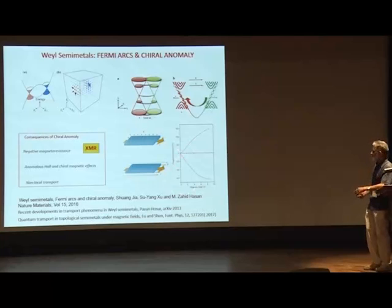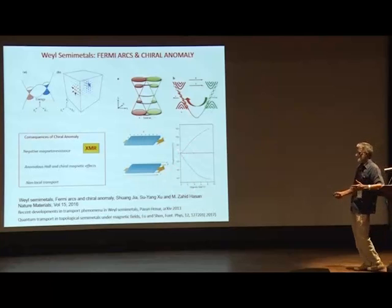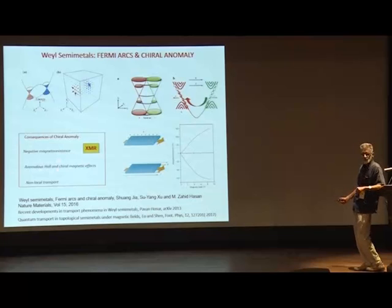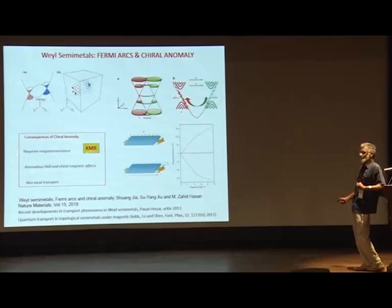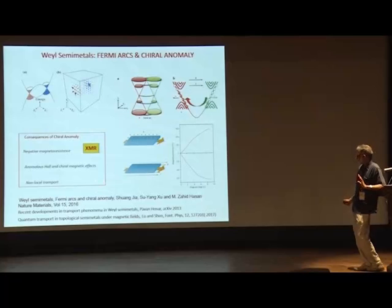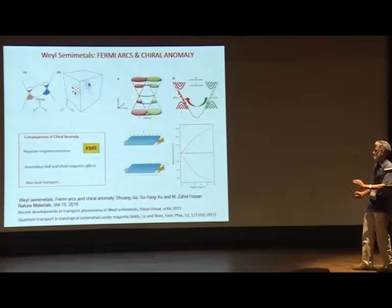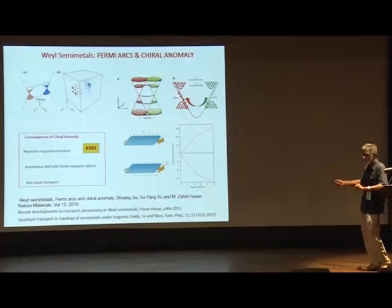This negative longitudinal MR is one signature of chiral electronic structure. Other aspects include the anomalous Hall effect and predictions of non-local transport. I will focus on the magneto resistance, particularly looking for negative longitudinal magneto resistance predicted in the Weyl semi-metal. These materials also show an extremely large magneto resistance.